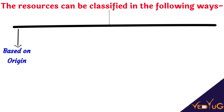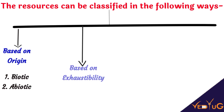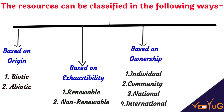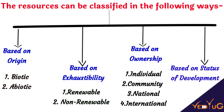Now let's see what are the types of resources. Resources are classified on the basis of origin, exhaustibility, ownership, and the status of development.